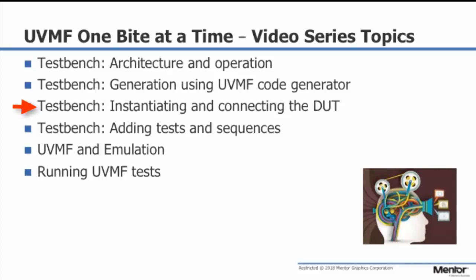The video on instantiating and connecting the DUT describes how to compile the source, instantiate the component, and connect the design to the signals of the interface agent. This procedure is described for Verilog and VHDL designs. The video on adding tests and sequences describes how to extend the generated sequence base to create new top-level sequences to implement stimulus scenarios. It also describes how to extend the test base and specify required overrides within the test.